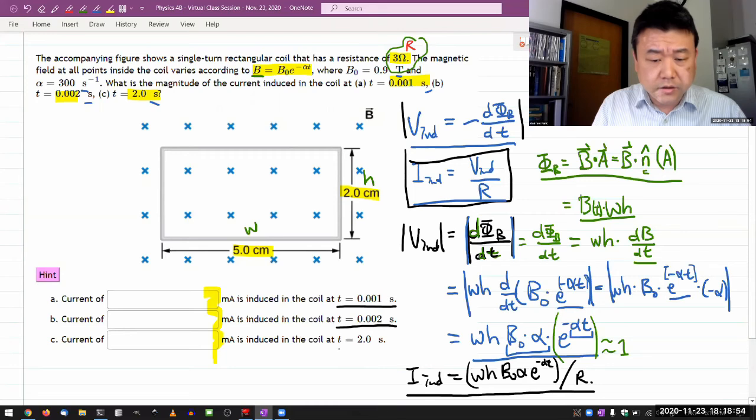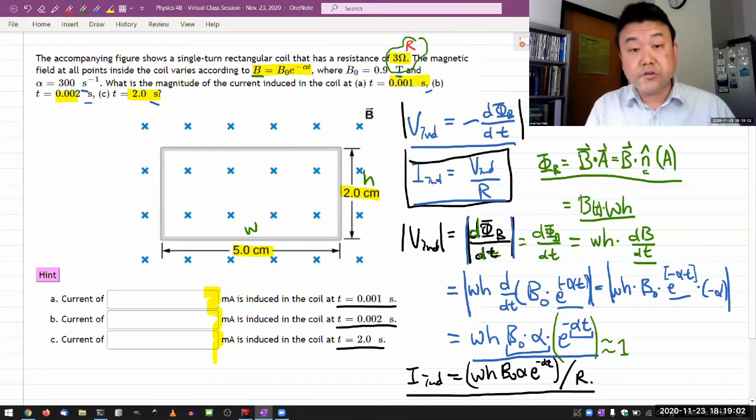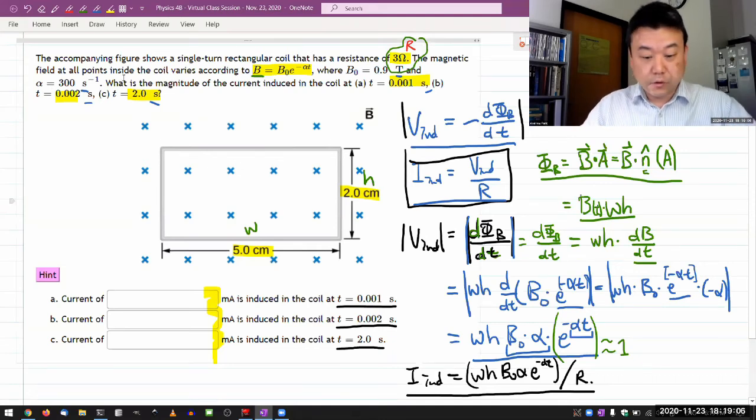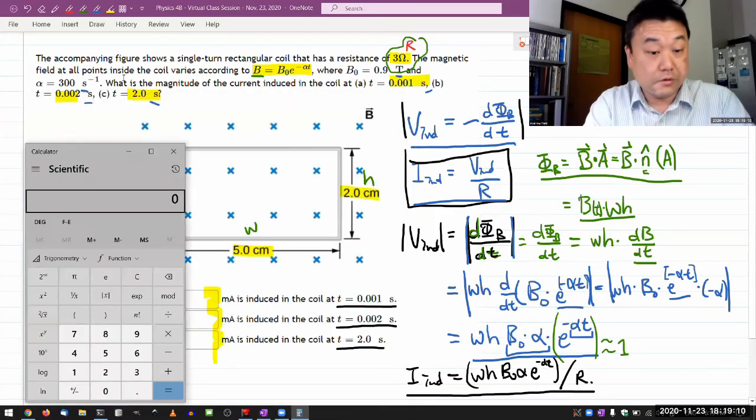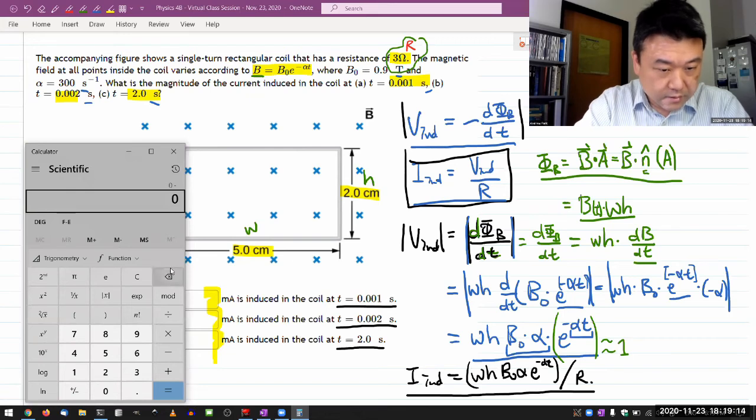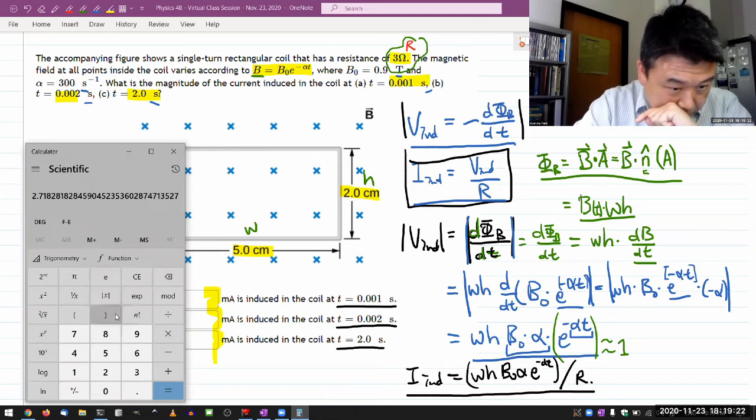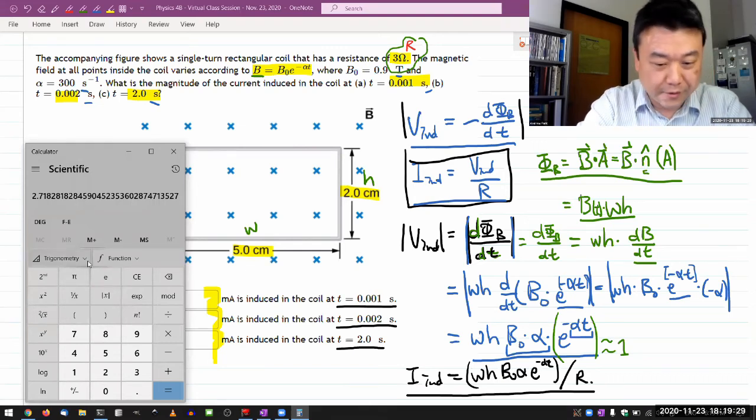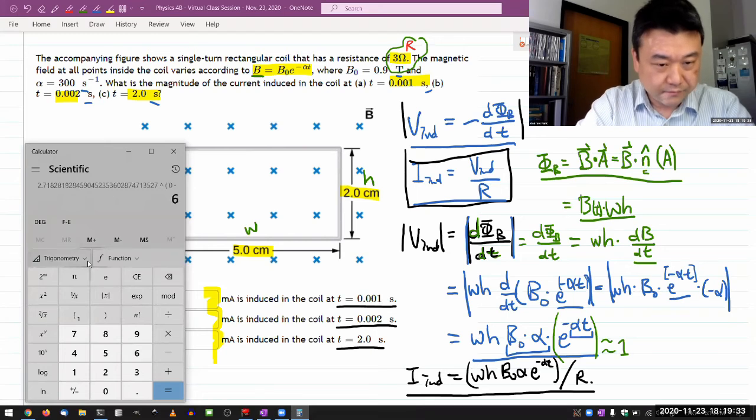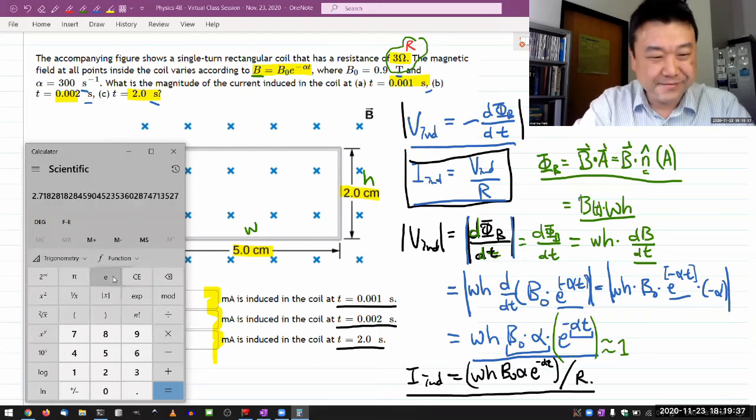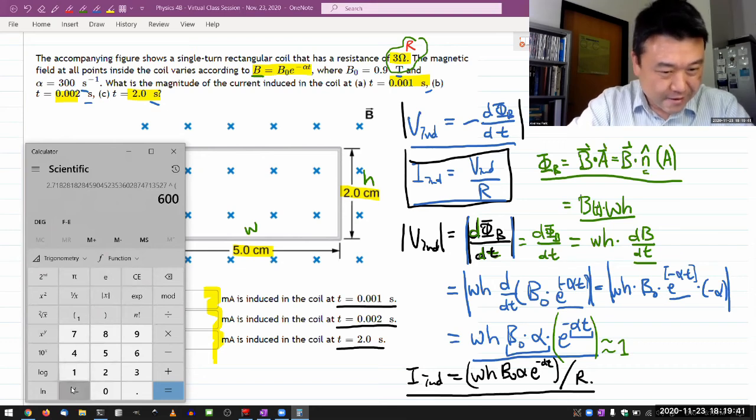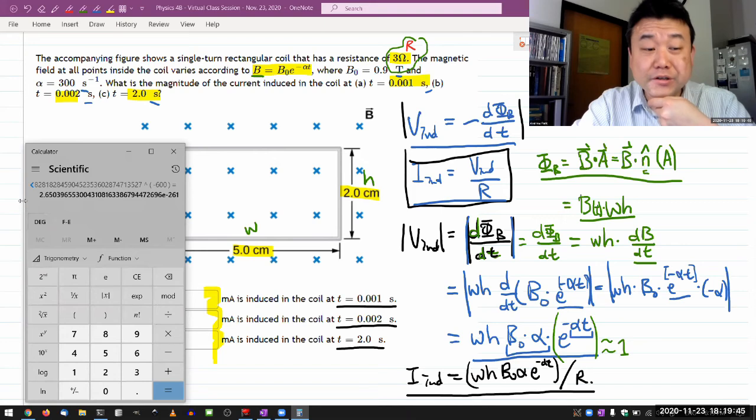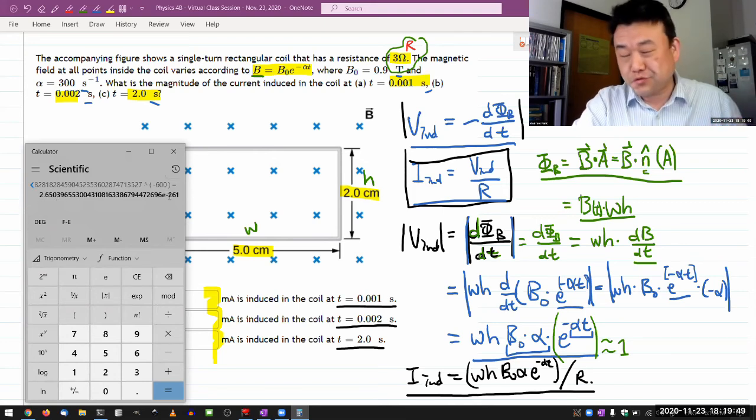At t equals 0.002, it's going to be substantially smaller. And in fact, by the time it gets to t equals 2.0, it's going to be much, much smaller. Because I can see that 2 times 300 is 600, and e raised to the power of minus 600. Let me try that. So e raised to power of minus 600, yeah, it is a very small number, 2.65 times 10 to the power of minus 261.